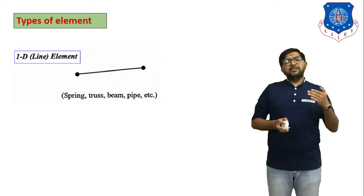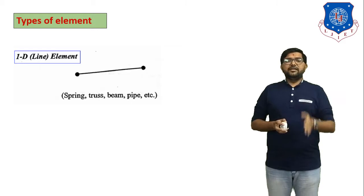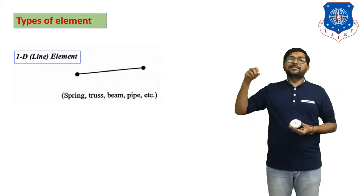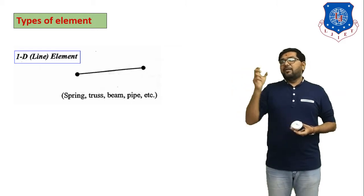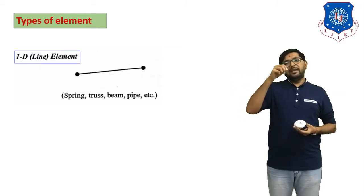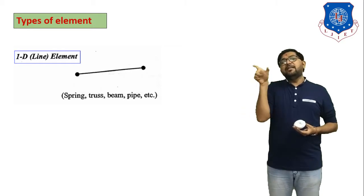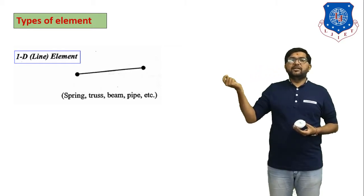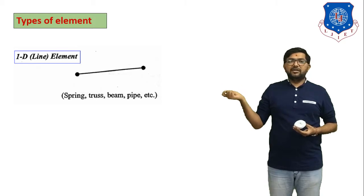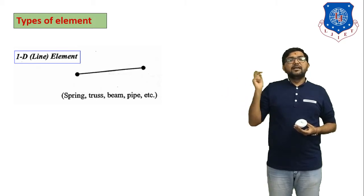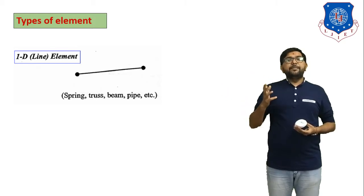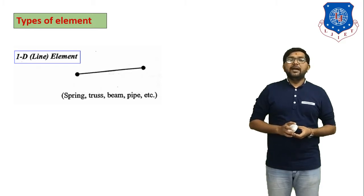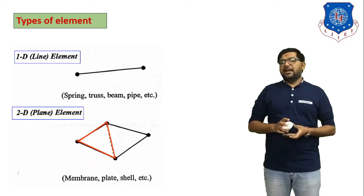In one-dimensional elements, examples include a spring — a spring is only one linear line and is considered a one-dimensional element. Other examples are truss, beam, and pipe, which are all considered 1D line elements.